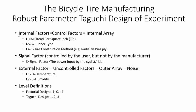Now we have three internal variables: thread per square inch, rubber type, and tire construction. Then we have two external variables: humidity and temperature, and one signal factor which is the power input by the cyclist. So in all these factors we have two levels each.